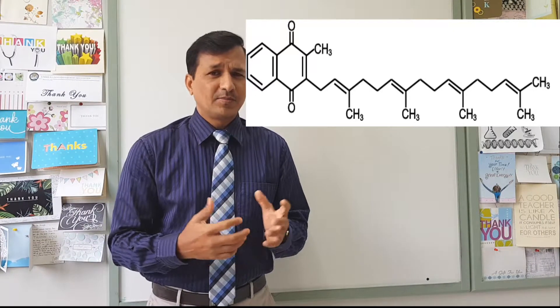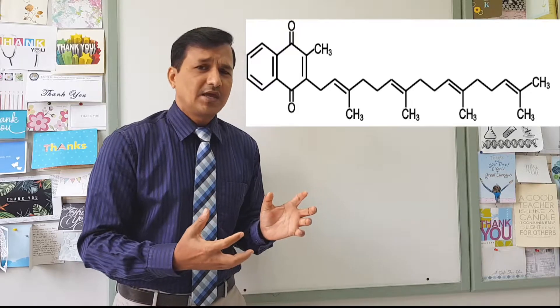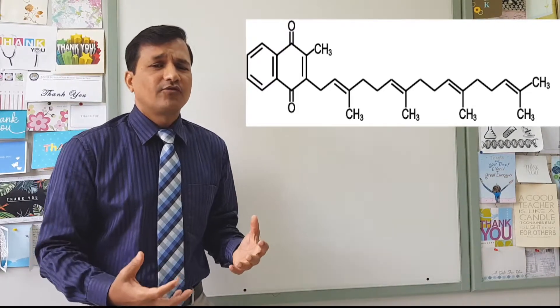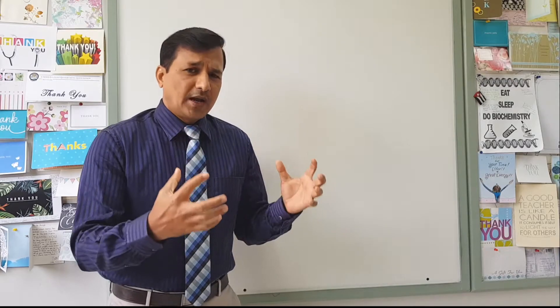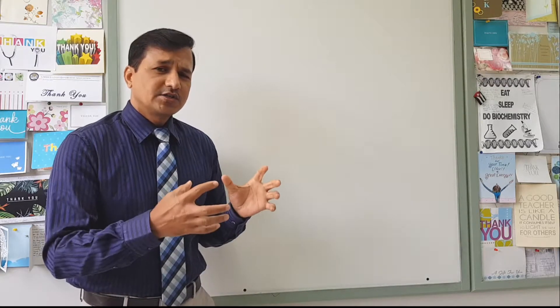Depending on the number of isoprenoid units, we have different types of menaquinones - written as MK's. We have MK4, MK5, MK6, 7, 8, 9, 10, 11, 12, 13, 14, all depending on how many isoprenoid units they have. Now once we consume a plant source of vitamin K - phylloquinone - the richest source is green vegetables, whether leafy green or other green vegetables. To name a few: broccoli, kale, spinach, collard, and lettuce.